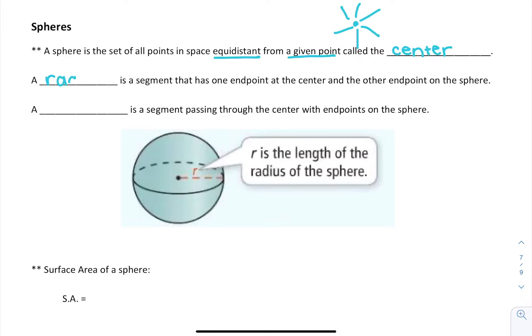The radius is a segment that has one endpoint at the center and the other endpoint on the sphere. So we take our center and we find some point on the sphere and we call that the radius.